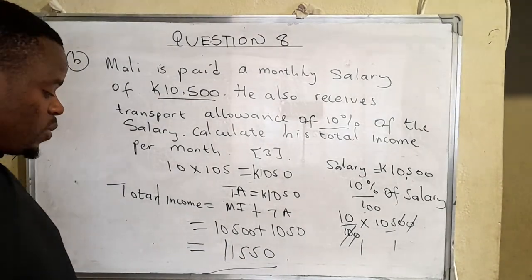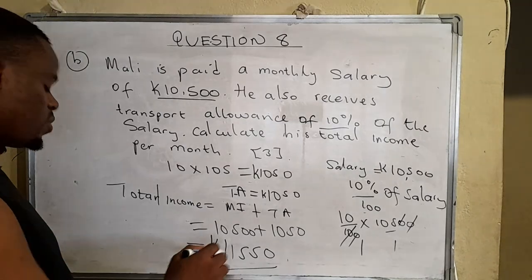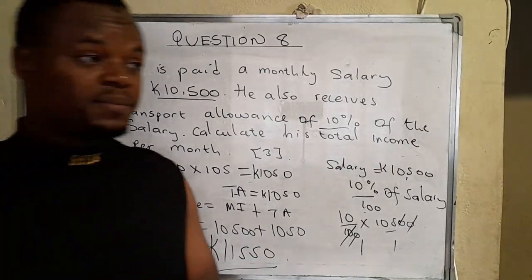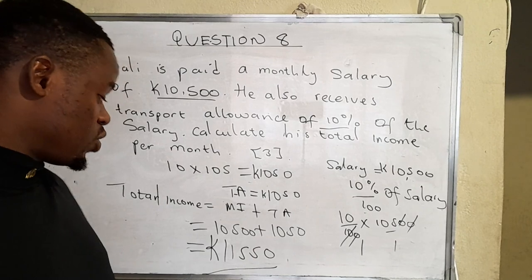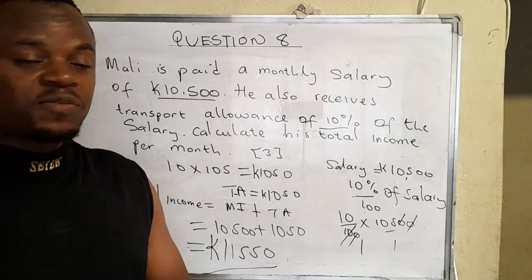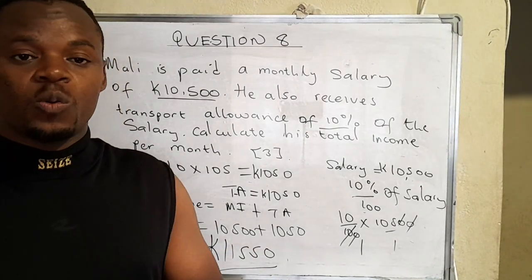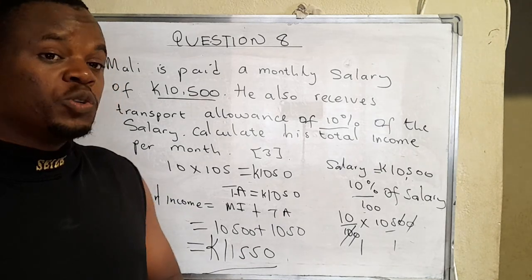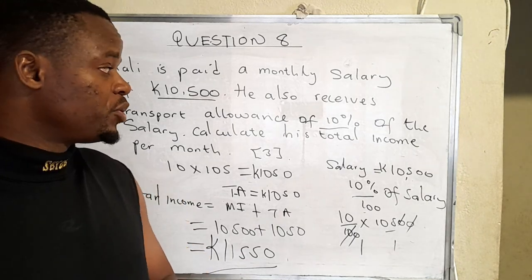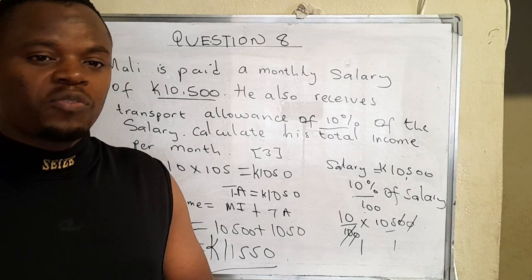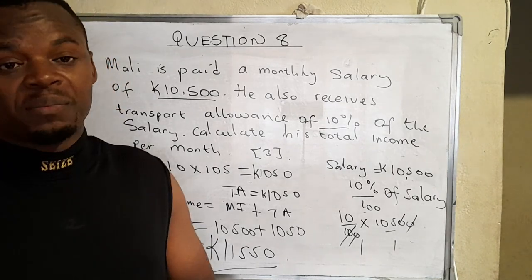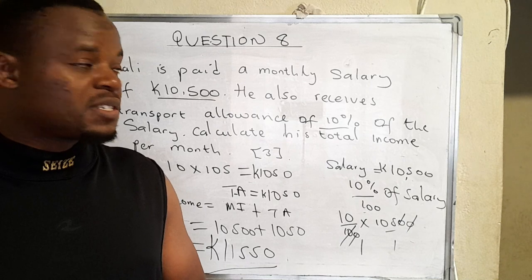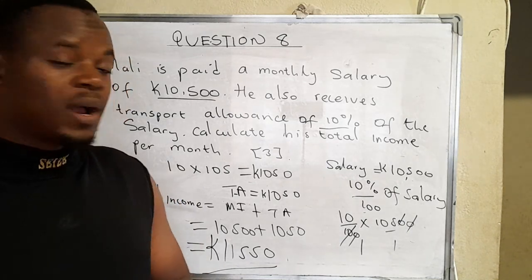That's eleven thousand five hundred and fifty. So his total income is eleven thousand five hundred and fifty. That's how you solve problems that have to do with social and commercial arithmetic. Of course, social and commercial arithmetic is diverse and there are other questions I will need to work out.